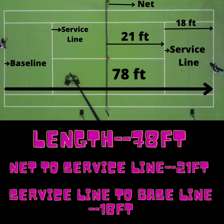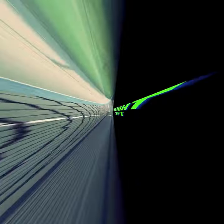The length of a tennis court is 78 feet or 23.77 meters. The distance from the net to the service line is 21 feet, and from the service line to the baseline is 18 feet, as shown in the diagram.